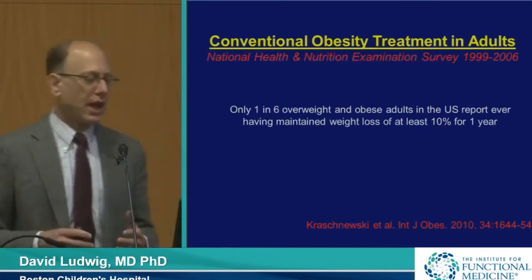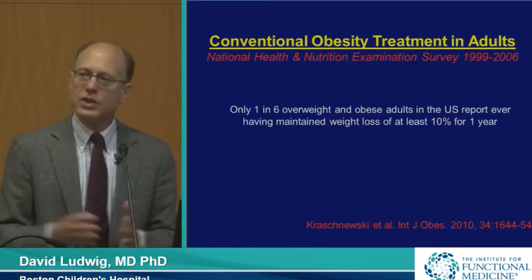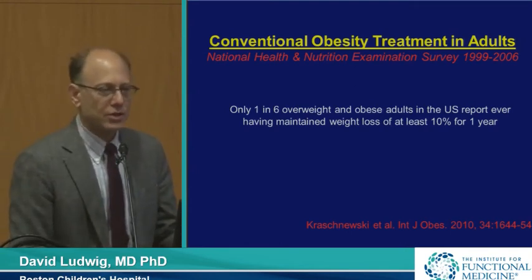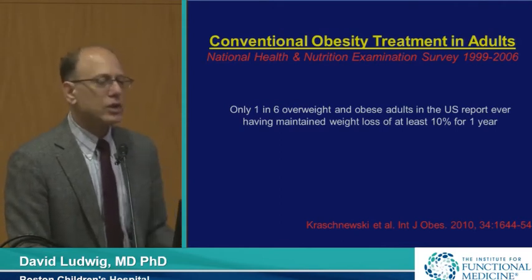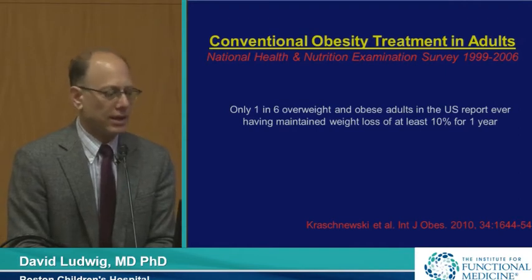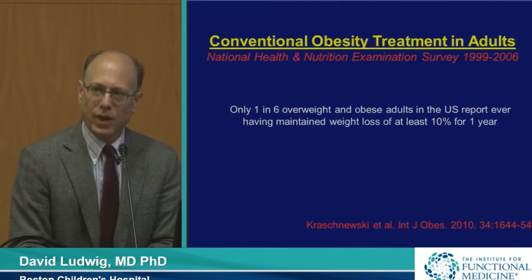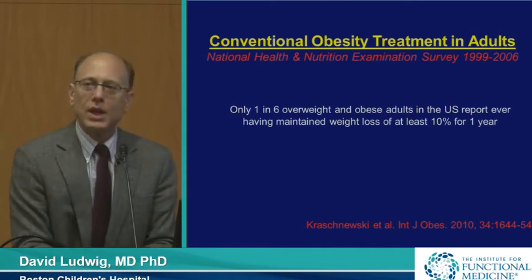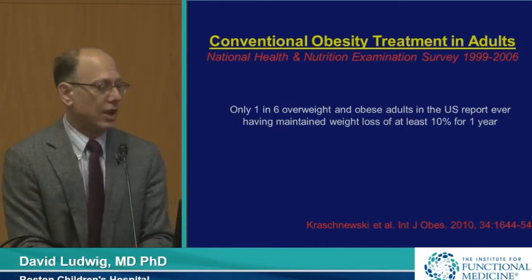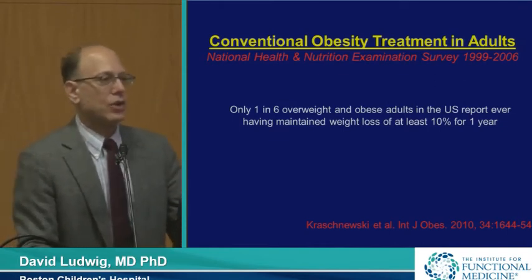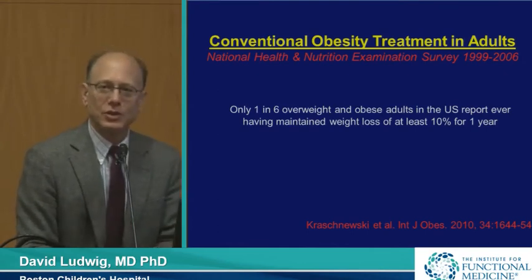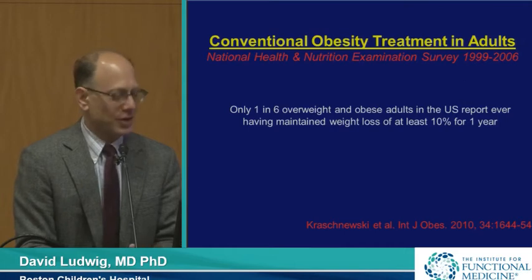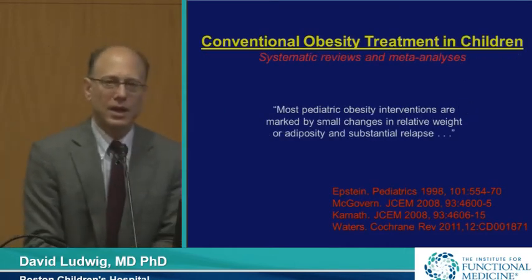We know that very few people can successfully keep weight off, even a small proportion of their excess weight, over a substantial period of time. A nationally representative NHANES survey found that only one in six people in the U.S. with high BMI reported ever losing 10% of their weight for just one year. This is likely an overestimate, because most people think they're a little taller and thinner than they really are. In pediatrics, outcomes are very much the same — most interventions are marked by small changes in relative weight and substantial relapse.